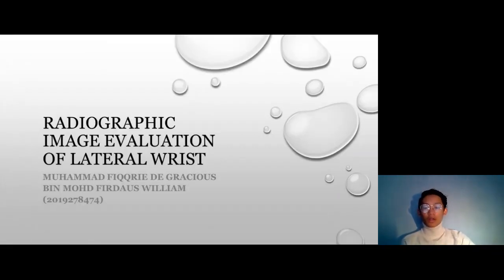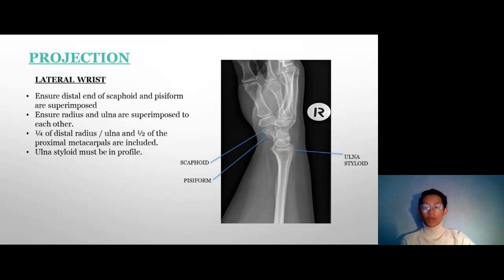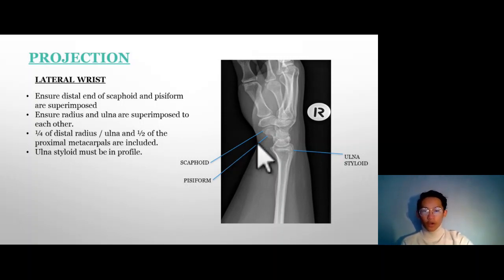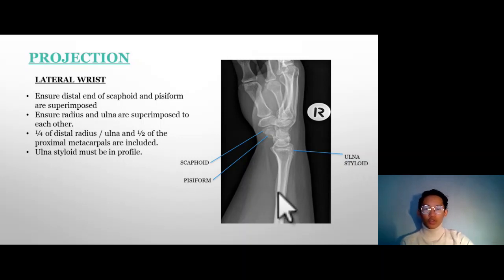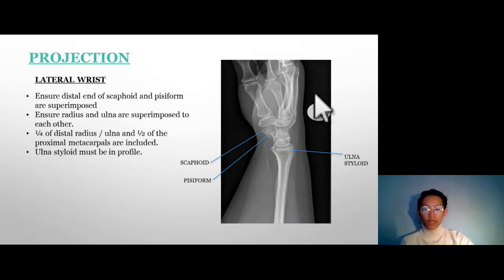We will start off with the projection. This is the projection of a lateral wrist. At first, we must ensure that the distal pole of the scaphoid and the pisiform are superimposed. Ensure that the radius and ulna are superimposed to each other — radius and ulna are right here. A quarter of the distal radius and ulna and half of the proximal metacarpals are included. The ulna styloid here must be in profile.